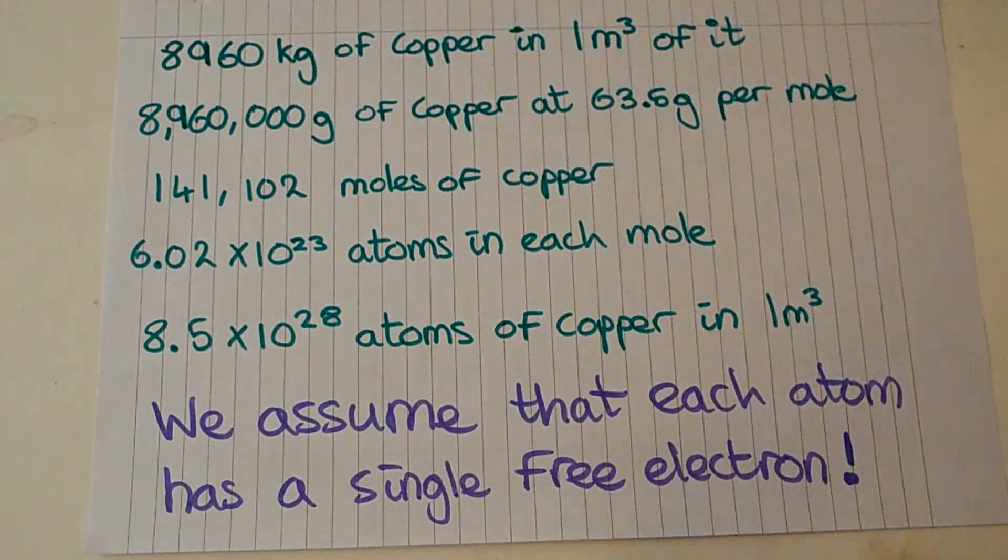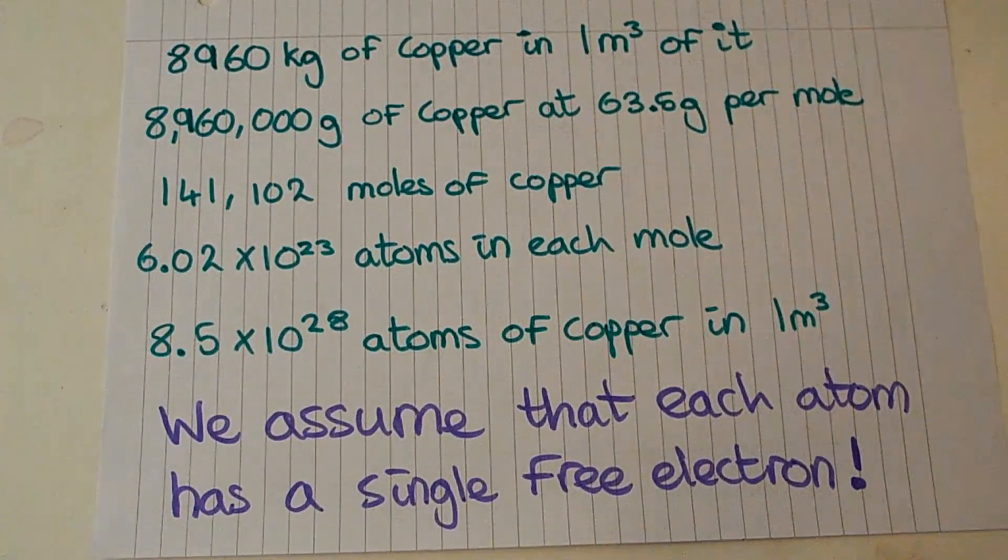Using Avogadro's constant we know that in each of those moles we have 6.02 times 10 to the 23 atoms of copper, and multiply those two together we get 8.5 times 10 to the 28 atoms of copper in a meter cubed.